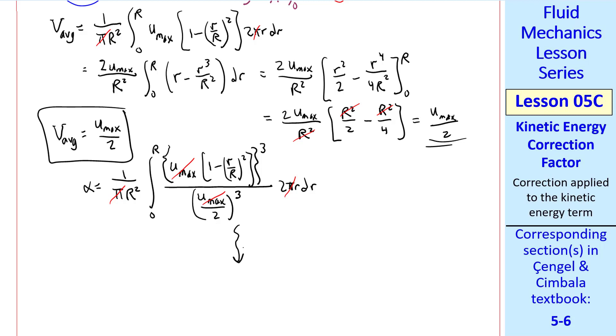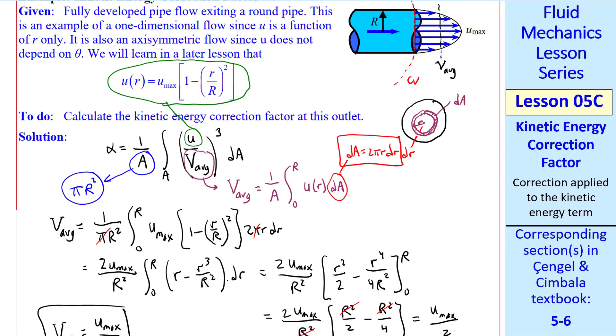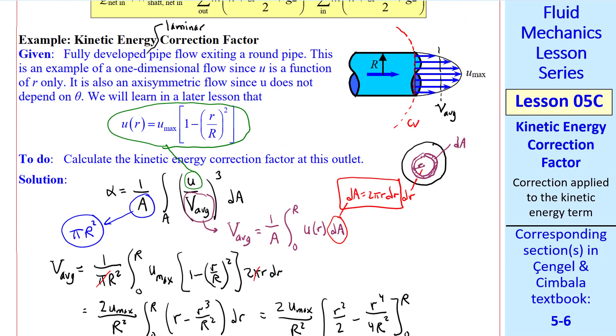By the way, in my notes, anytime you see a squiggly arrow pointing down, this means there's a lot of algebra that I'm skipping. This is a fairly easy but tedious integral. And when all is said and done, we get α equal 2 for fully developed laminar pipe flow, which is the problem we're talking about here.